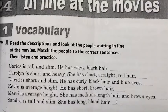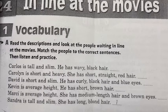Likewise, today we will learn from exercise 1A — how to describe 6 persons. Let's turn to page 80 and look with me. Carole is tall and slim; he has wavy black hair. Carole is short and heavy; she has short straight red hair.